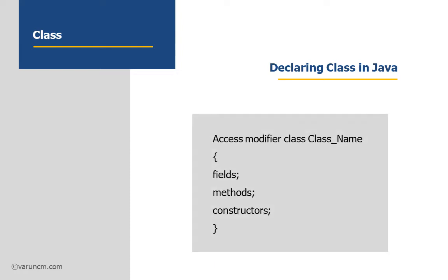This is the general syntax for declaring the class. It contains the access specifier modifier, followed by the keyword class, then the name of the class. And inside the curly braces, you could find the body of the class which contains all the fields, methods, and constructors.